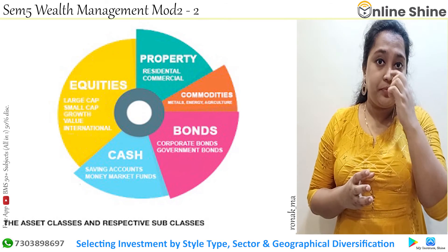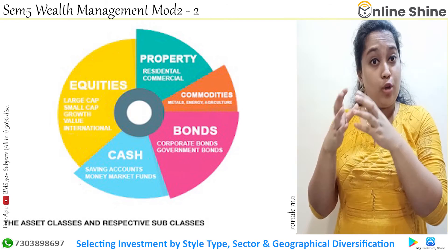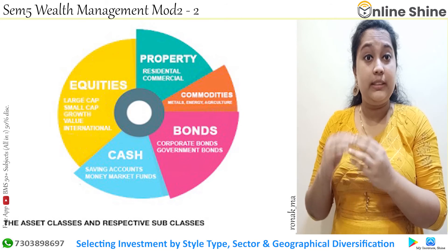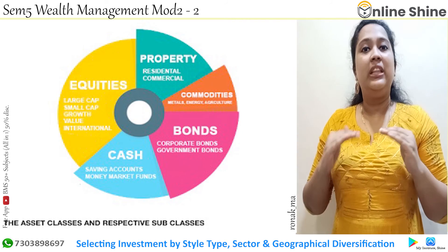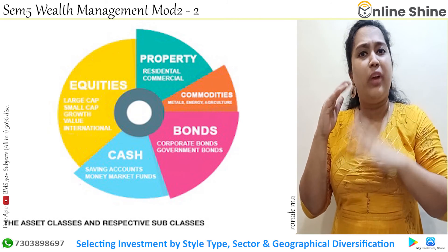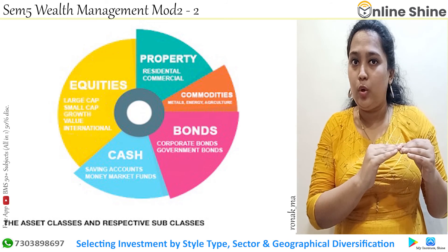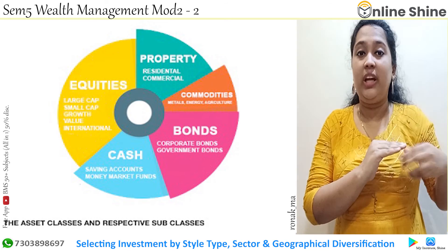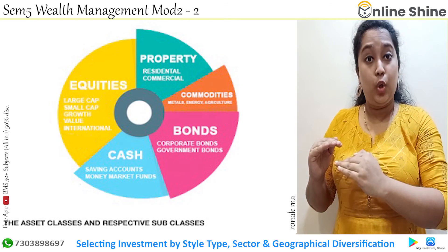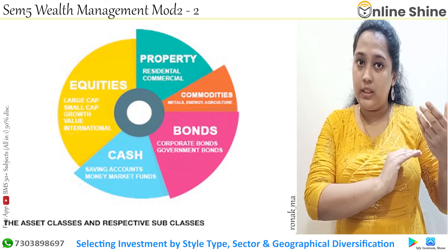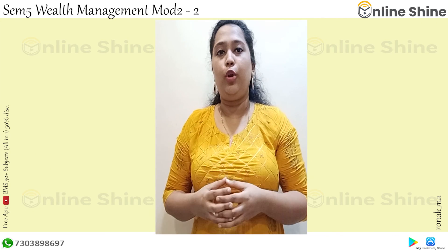The last strategy is selecting investment by style, type, sector, and geographical diversification. Equities are of two types: value shares and growth shares. Value shares are ones whose dividend is high but the growth of the share is low. Growth shares are ones where the dividend is low, but the share's growth — its value — increases more. So in value shares, dividend is high and growth is low; in growth shares, dividend is less and growth is more. Here we will end this chapter, and our second module is done. Thank you everyone.